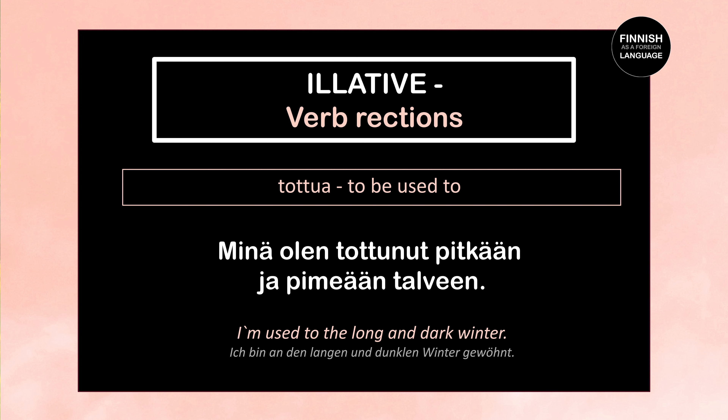Next: Minä olen tottunut pitkään ja pimeään talveen — I'm used to the long and dark winter. Olen tottunut is the first person perfect of tottua, meaning to be used to. Pitkään and pimeään are the illative forms of pitkä and pimeä, and they both stand in the illative because they refer to talvi (winter), which is also in the illative: talveen.